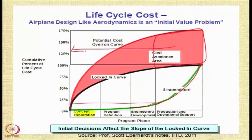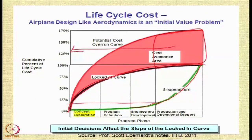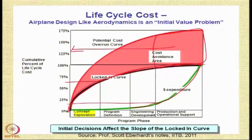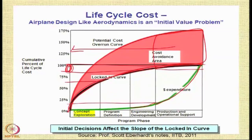The cost of the project can become even 1.75 times the planned amount. The initial decisions affect the slope of the locked-in curve — decisions taken early determine how much cost is locked in at each stage. A very large portion of life cycle cost comes under the early phases, and the improvements possible during production and operational support are very small. That is why we must invest a lot of energy and planning effort in the early stages, because this is where it makes the most difference.